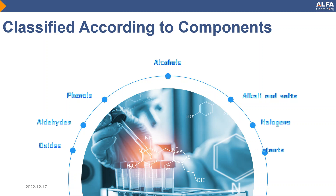Surfactants: The bactericidal mechanism involves modifying the permeability of the cell membrane, inducing cytoplasm leakage, impeding respiration, or denaturing proteases. It is characterized by eliminating bacterial propagules but poorly affects spores, fungi, viruses, and tuberculosis bacteria. Surfactants manifest good performance under alkaline and neutral conditions. It is a medium to low efficiency disinfectant and can be used as a general disinfectant.